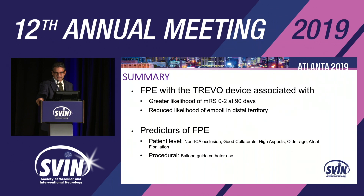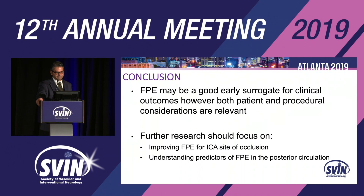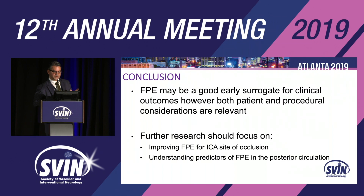In summary, with the Trevo device, first-pass effect is associated with greater likelihood of good outcome as defined by mRS 0–2 at 90 days, and reduced likelihood of emboli in distal territory. Predictors of first-pass effect include both patient-level factors — non-ICA occlusion, good collaterals, favorable ASPECTS, older age, and atrial fibrillation — as well as procedural factors. Consistent with the NASA, Stratus, and ARISE 2 registries examining the Solitaire and EMBO trap devices, balloon guide catheter use appears to be a consistent association with first-pass effect. First-pass effect may be a good early surrogate for clinical outcomes and may become a relevant early biomarker of device efficacy. Further research should focus on improving first-pass effect for ICA occlusions, as this appears to be a risk factor for non-FPE.